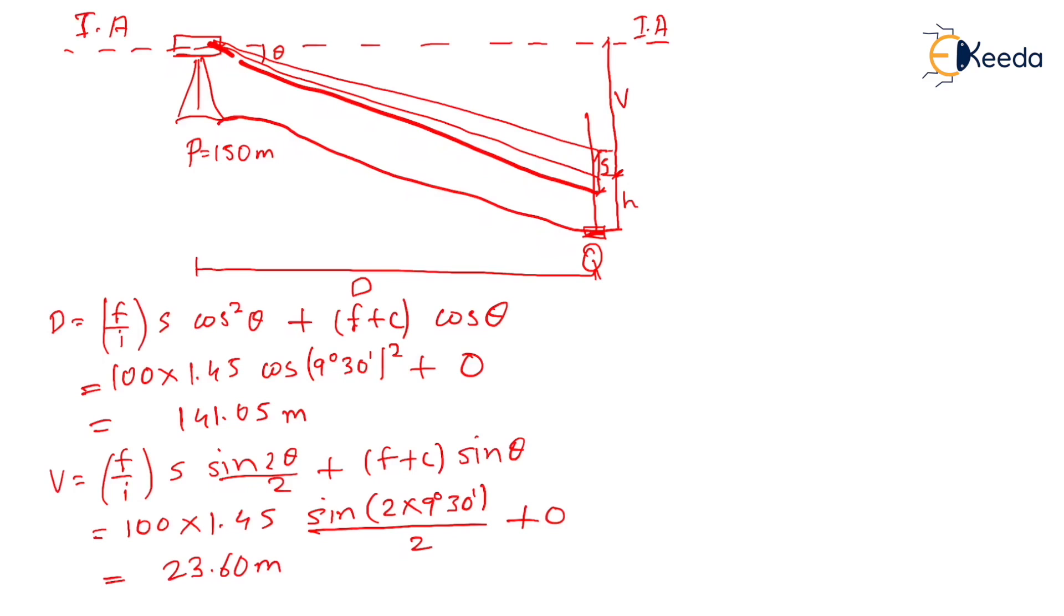So now we have horizontal distance, that is distance D which we have found out. Now we have to find out RL of Q. To find out RL, first of all we require RL of instrument axis. RL of instrument axis: we are standing over point P and we have to reach to instrument axis.